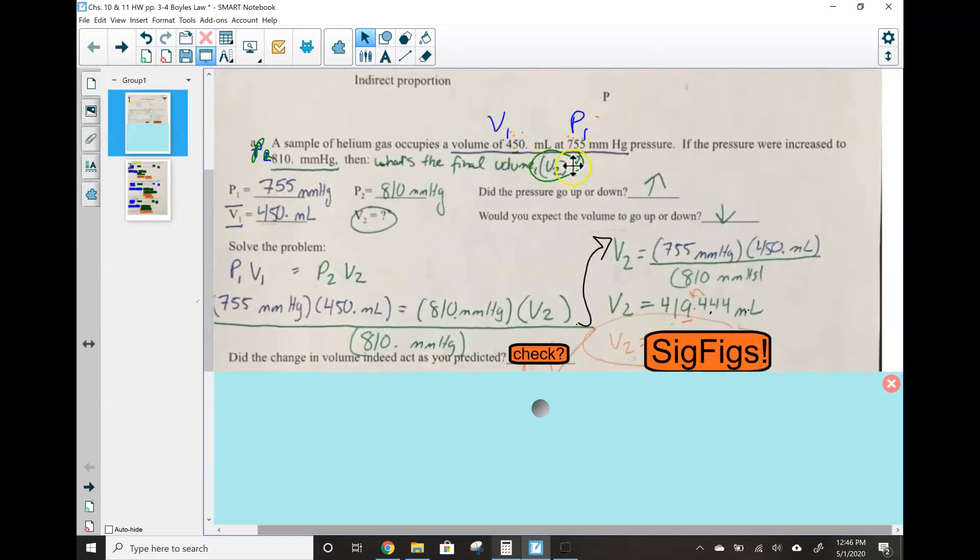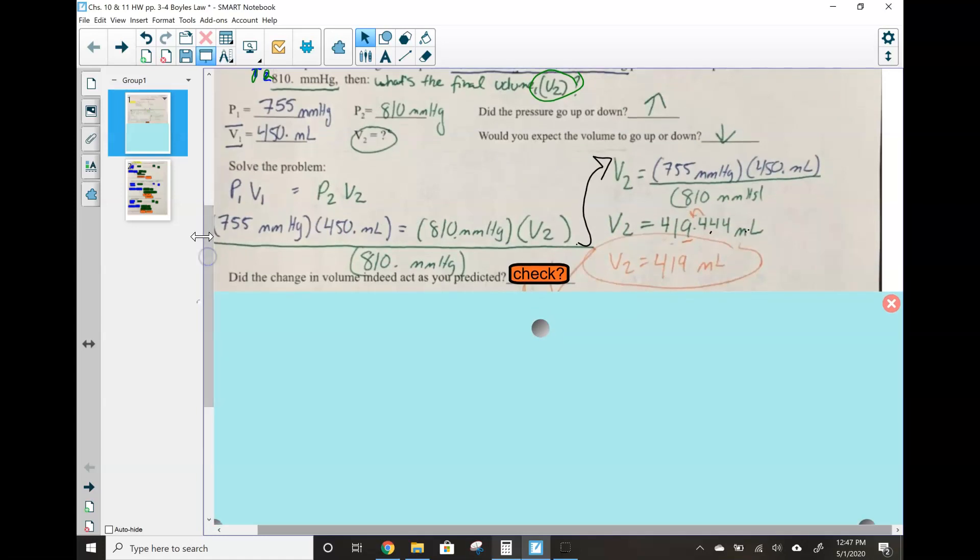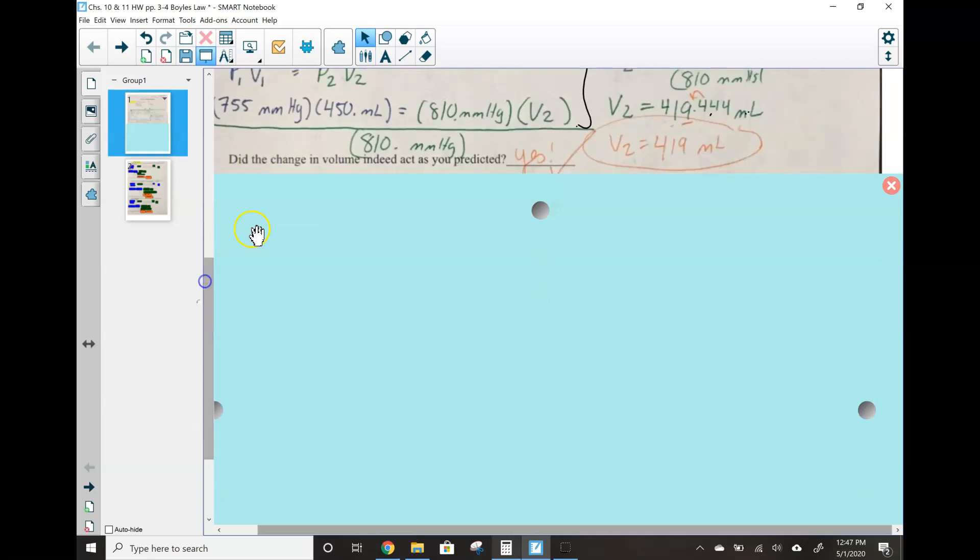So in our calculator, we're going to take 755 times 450 and then divide that by 810. That will give us our calculator answer, which is good, but too precise. If you look back to the original problem, how many sig figs were we given? Three. We're multiplying and dividing, so that means we keep that least total number. So 1, 2, 3. The 9 is the third sig fig. Look to the right. What does the 4 do to the 9? Keeps it the same. So 419 is our final answer. Now before we're done, we have to do our check. Before, we expected the volume to go down. It should be less than 450. Is 419 less than 450? Yes. That means everything went correctly. If we had said no, that means you have an algebra mistake somewhere in your problem. Go back and fix it.